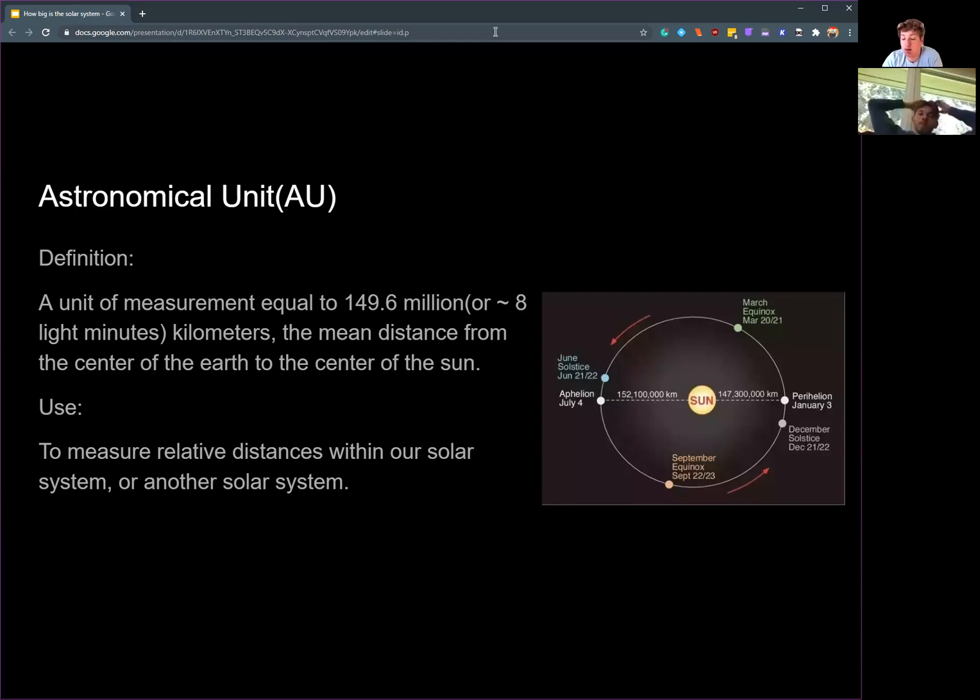It's used to measure relative distances within our solar system or another solar system, if you're measuring if a planet's in the habitable zone or something like that, and it's also important in another unit of measure as well.